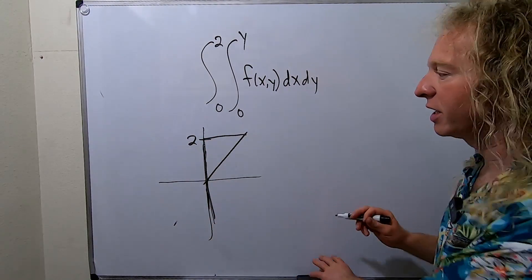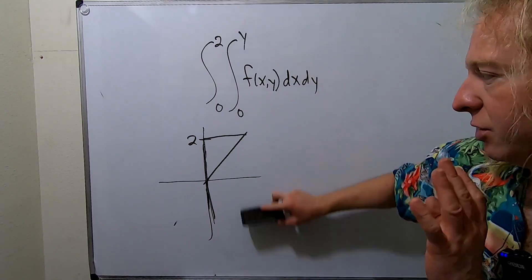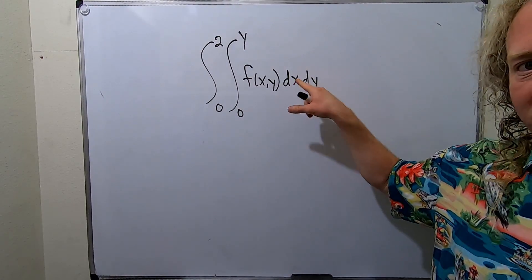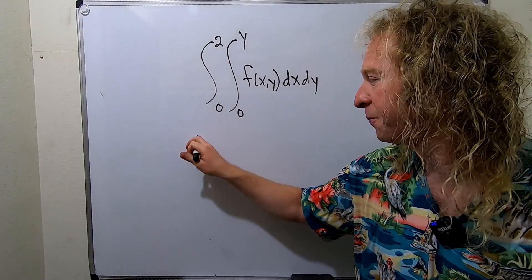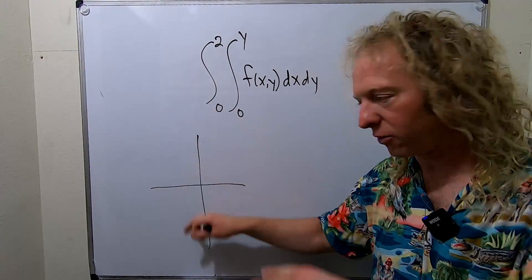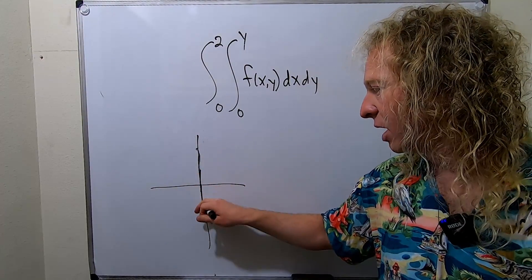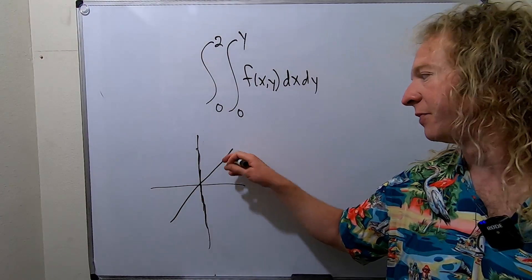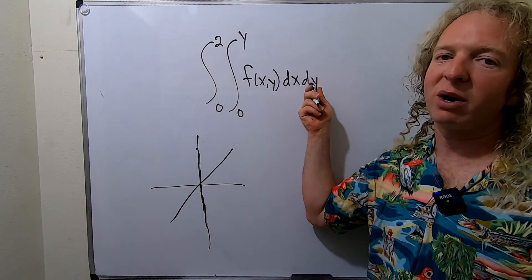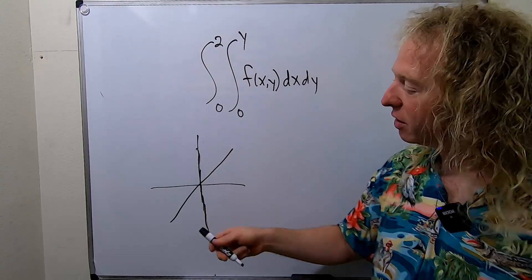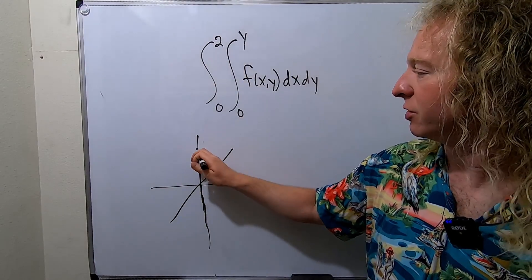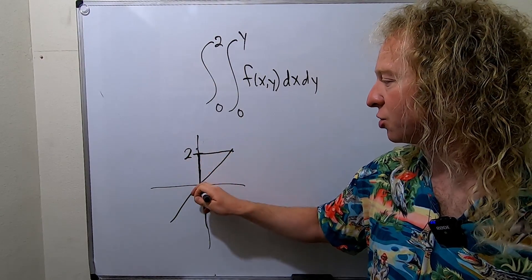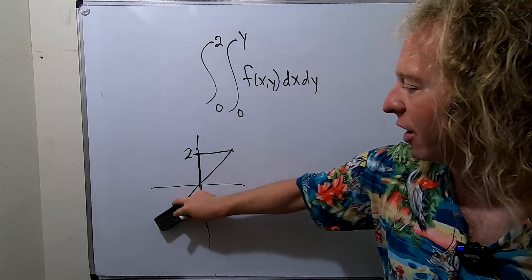Let me do that again from scratch one more time, just to make sure you've got it. First you do x, so you're going from x equals 0 to x equals y. x equals 0 is a vertical line — that's this line here. x equals y is like y equals x, so it looks like this. Then you look at the outer integral: y goes from 0 to 2. Here's 2, and that's how you see that it's just this triangle — that's your region of integration.